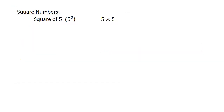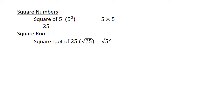Square numbers. The square of five equals twenty-five. The square root of twenty-five equals five.